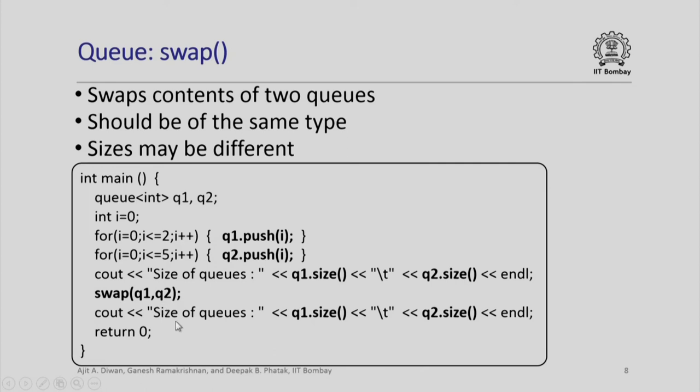Now if we print the sizes of the queue, you will see that q1 dot size will be now 6 and q2 dot size will be now 3 because we have swapped the two queues. This is just an illustration of the simplicity provided by the swap function.